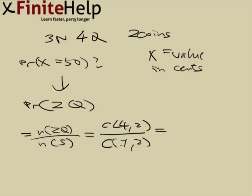7-2 is going to be 21. 4-2 is going to be 6. So this comes out to 6/21 is your answer.